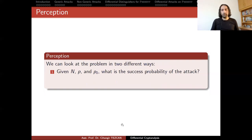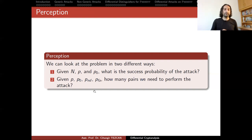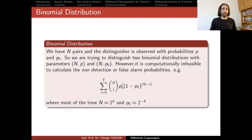We can look at the problem in two ways. We might be given N, P, and P0. P and P0 are fixed once you find the distinguisher — you calculate P0 yourself and also how likely it is to happen for a random permutation, which is P. If you also fix N, you might ask: what is the success probability of the attack? Alternatively, you can fix the probability of non-detection and false alarm yourself, and then ask how many pairs you need to perform the attack so that these probabilities hold.